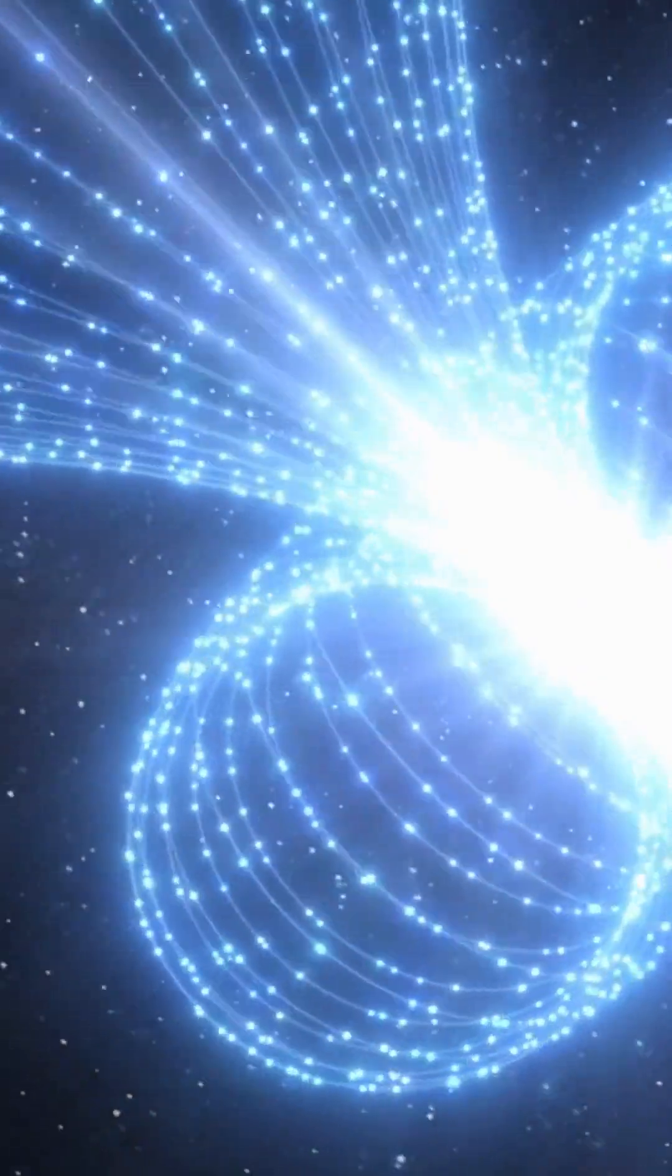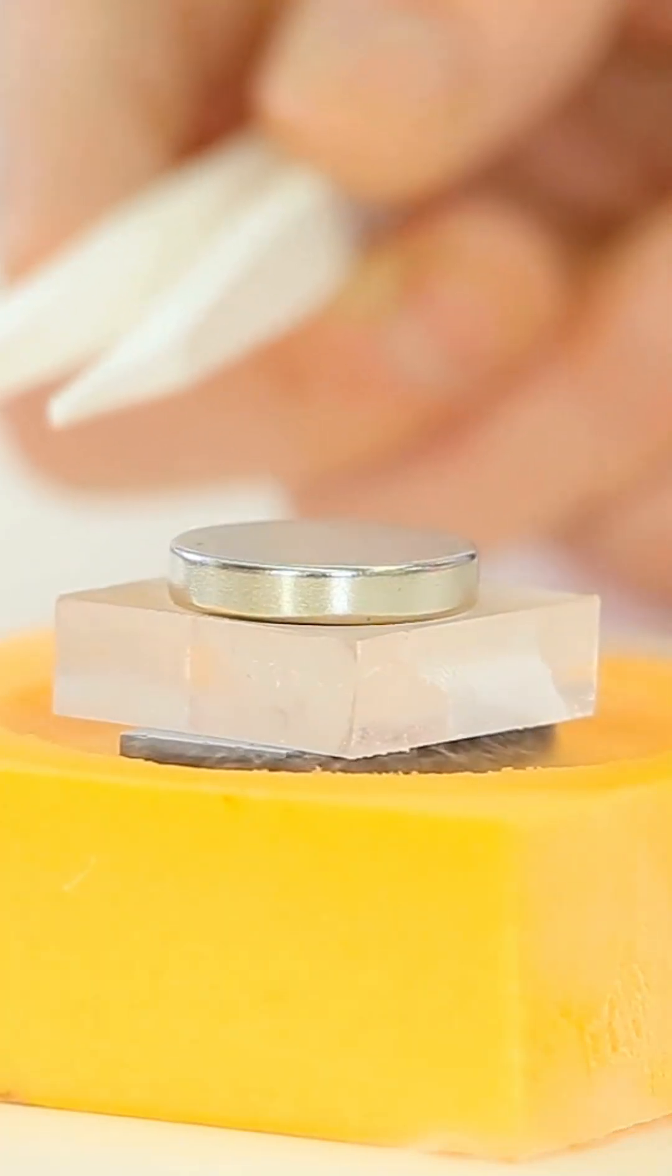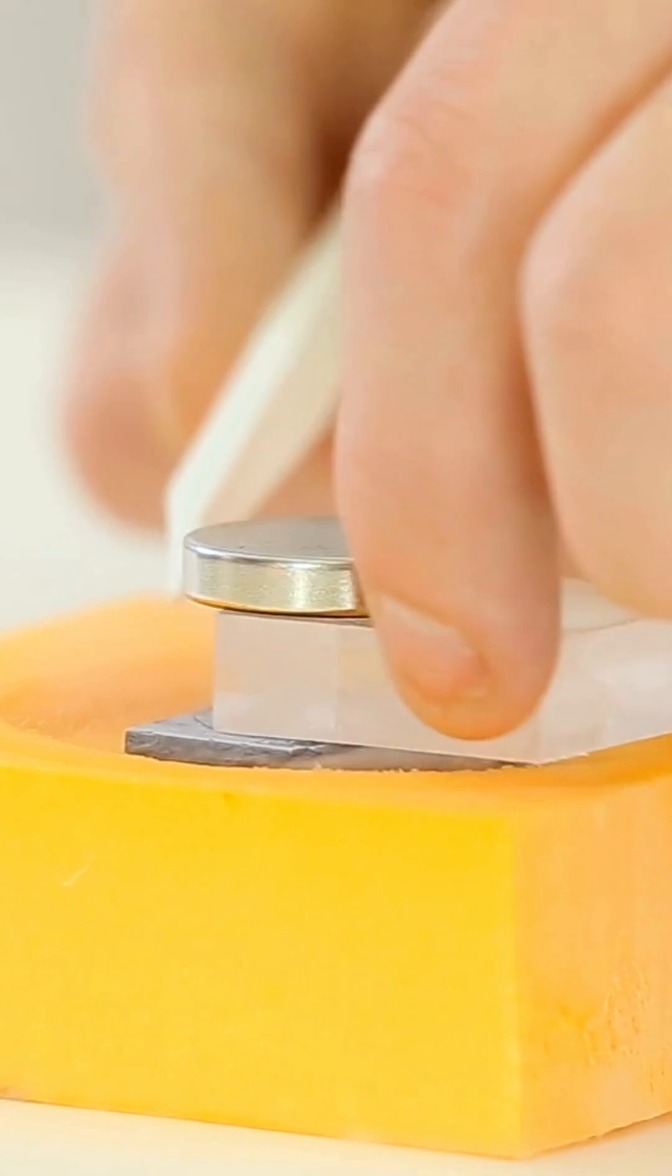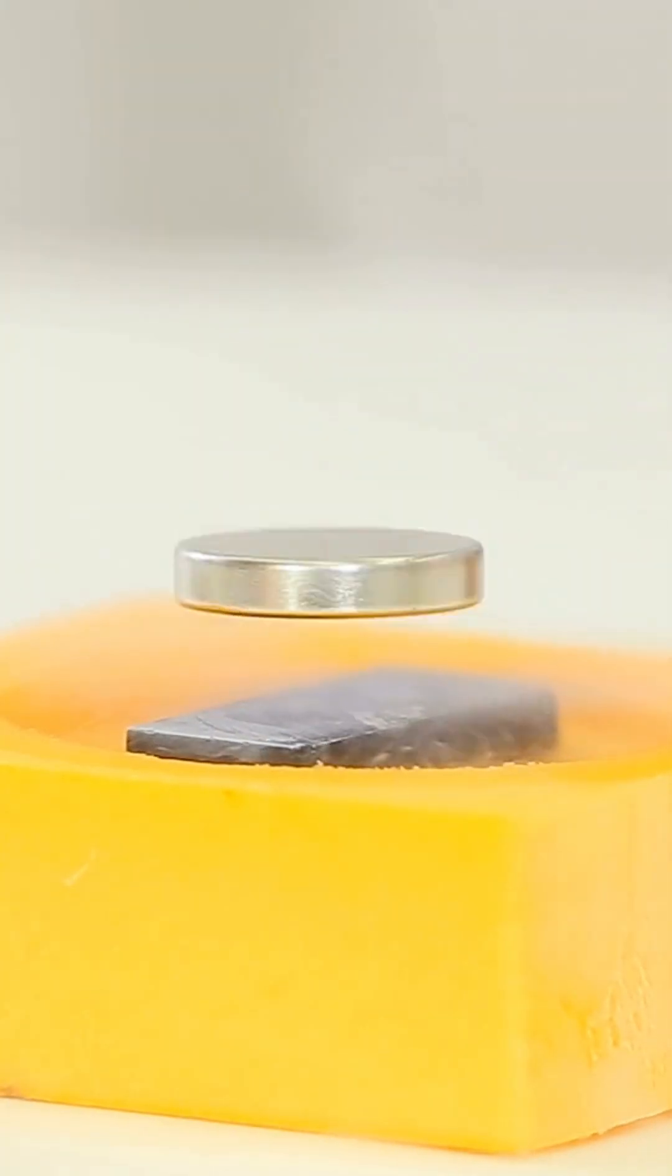However, some field lines pass through the superconductor when impurities are present. So quantum mechanics enables magnetic spikes to penetrate and grab hold of it.